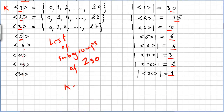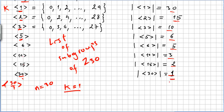For instance, if K is 1 and N is 30, then 30 divides 1. So this is the subgroup of ⟨30/1⟩, which is ⟨30⟩, and the order will be K, which is 1. Here N is 30. 30 divided by 2 gives 15.